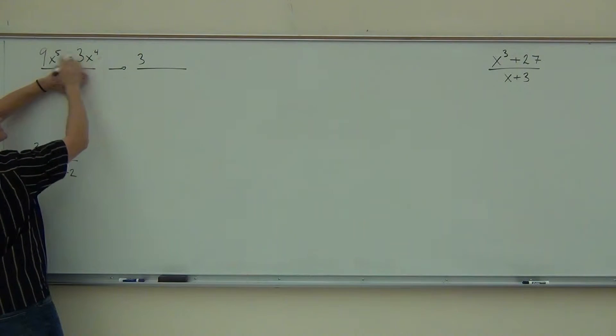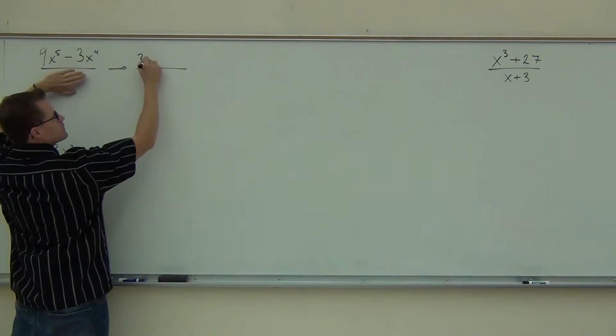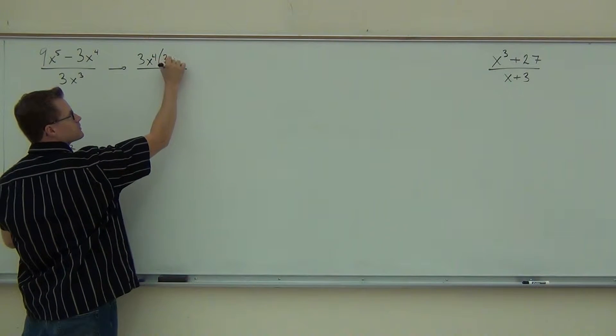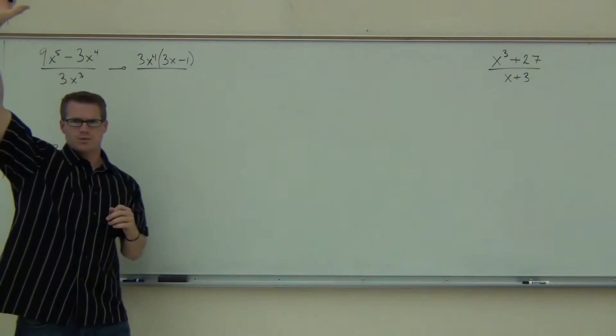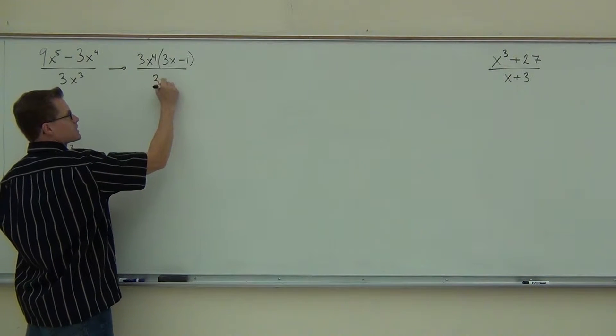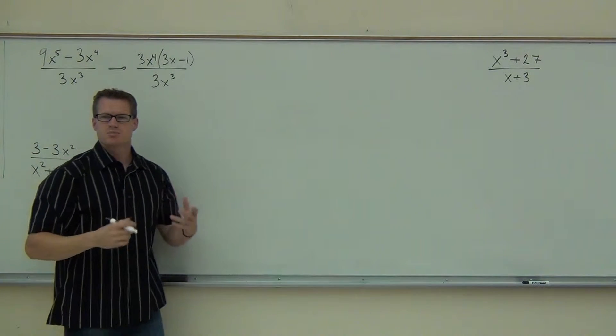So we're just going to factor out what? Three? Great. Any x's? You're going to take the biggest one that's common to both. What's that? And what we have remaining is? On the denominator we have 3x to the third. Does anything simplify?